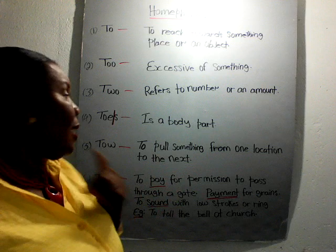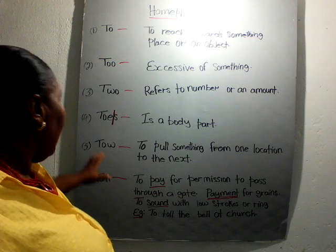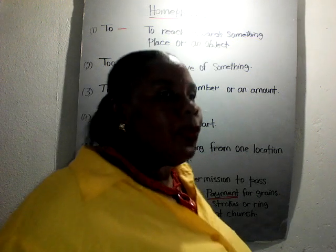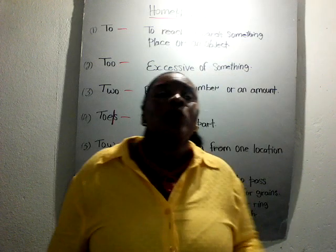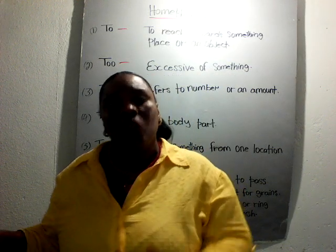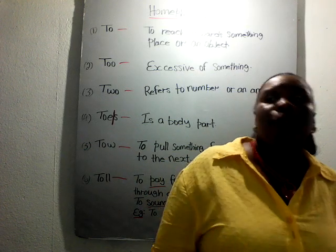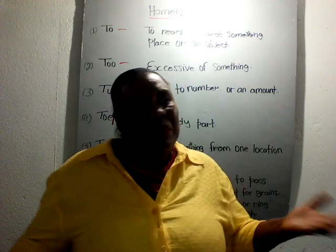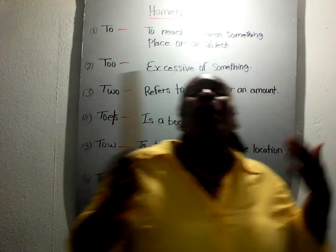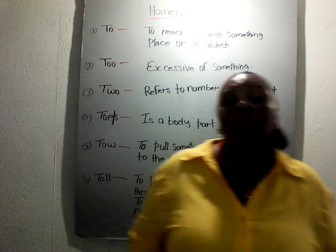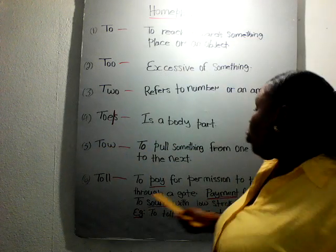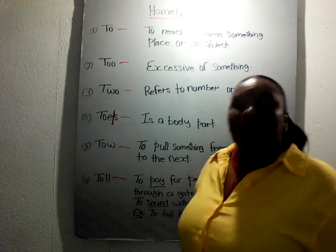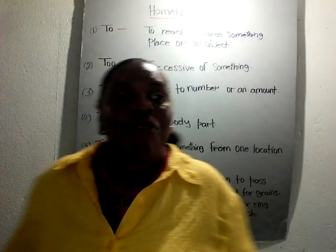The next word we're going to talk about is 'toll'. Toll means to pay an amount for a passageway to go to a destination. You pay your toll — say around $200 or $50 — to go through a passageway or through a gate.